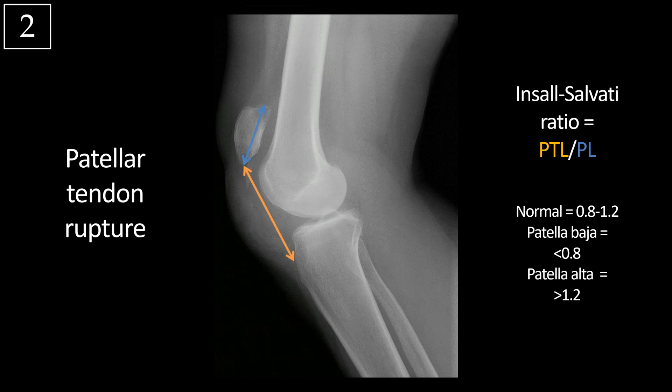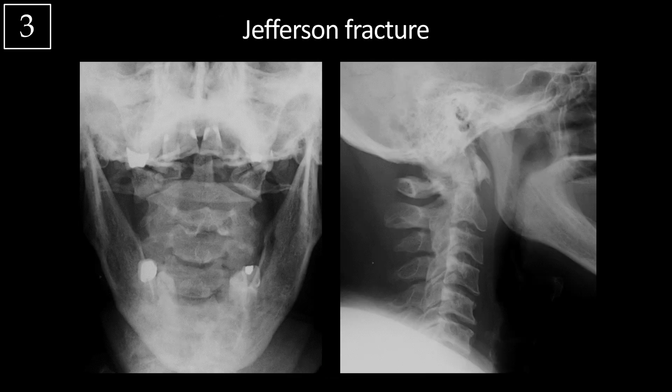Patellar tendon rupture is less common than quadriceps tendon rupture and is characterized by patella alta, measurable with the Insall-Salvati ratio greater than 1.2. Jefferson fracture is an axial load burst fracture of C1. Look for offset of the lateral mass of C1 relative to C2, and importantly check the atlantodentate interval — less than 3 millimeters in adults, less than 5 millimeters in children. If widened, it may indicate associated transverse atlantal ligament disruption, which may prevent conservative treatment.